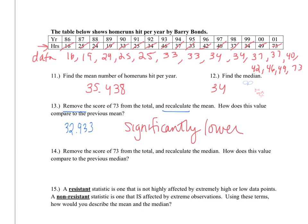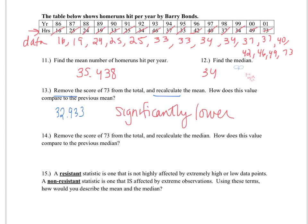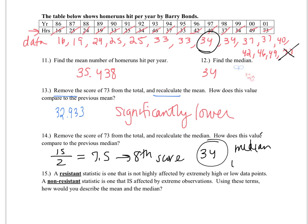Alright, now in question 14, we are asked to remove score 73 from the total and recalculate the median. Now in this case, if I cross the 73 off the end, all that this does is slightly shift our center over. Instead of having 16 scores, we are now going to have 15 scores. And as we talked about before, you take the number of scores, divide by 2. In this case, I get 7.5, which means I round up and take the 8th score. So if I go on my list, 1, 2, 3, 4, 5, 6, 7, 8, the new median is going to be 34. And in this case, the median is the same.